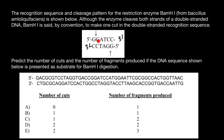So reading from the five prime end, the sequence is GGATCC. And on the other strand, reading from five prime to three prime in that direction, we get the same sequence: GG, AT, CC. This is what we call a palindromic sequence in genetics — not a sequence that reads the same forward and backward on a single strand, but a sequence that reads the same from five prime to three prime on both strands of the double-stranded DNA.